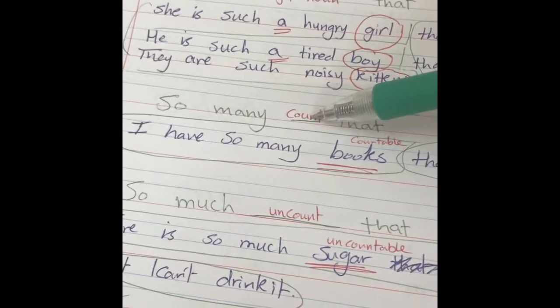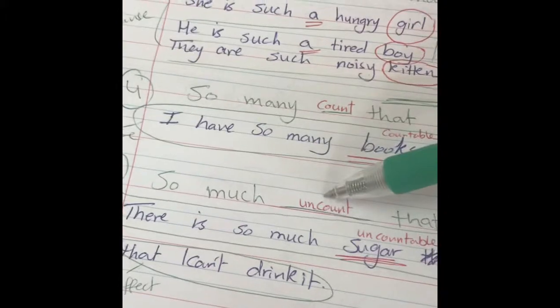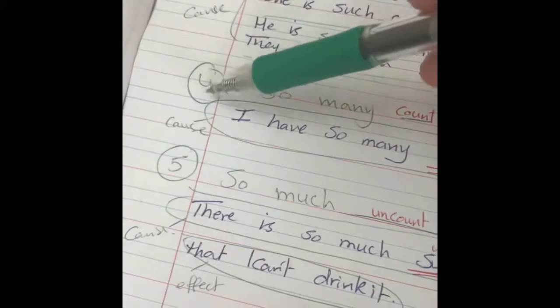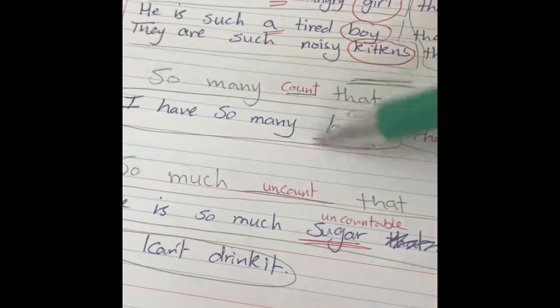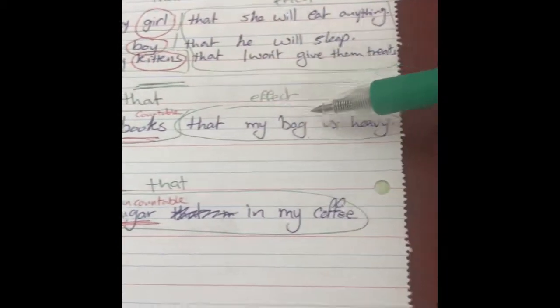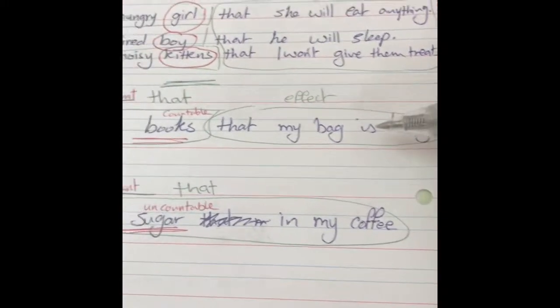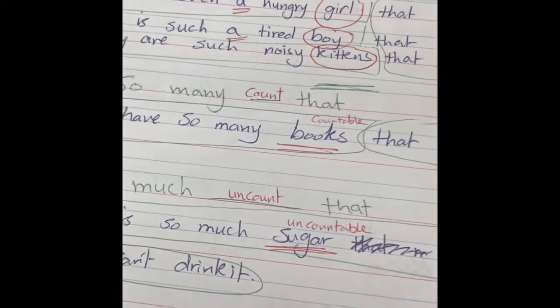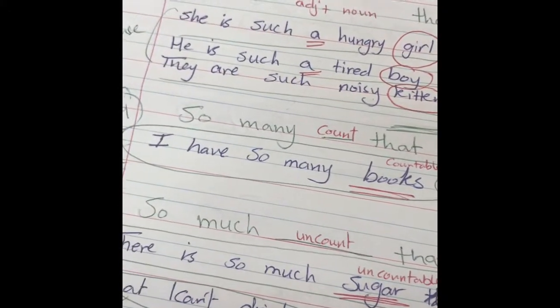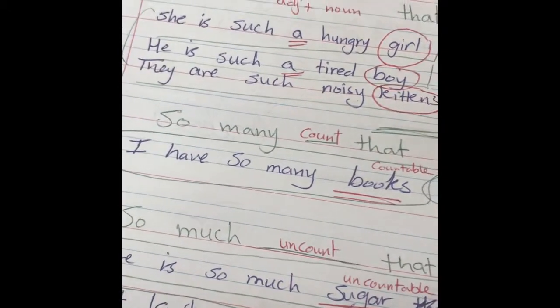Last thing, so many, so much. We took before that so many is used with countable and so much is used with uncountable. I have so many books, this is the cause. I have so many books because it's countable, I use so many, that my bag is heavy. I have so many brothers that I don't need anyone's help. I have so many pens that my pencil case is full.